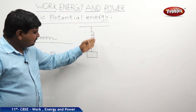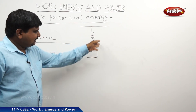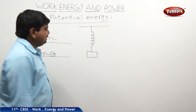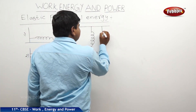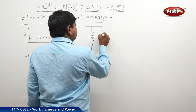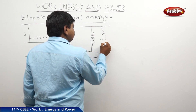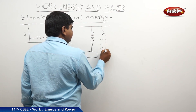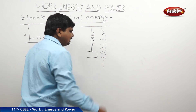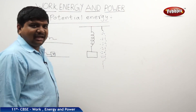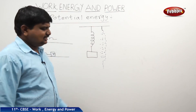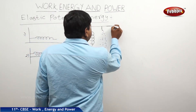Oscillations is nothing but to and fro motion — from expansion to compression. That means it will oscillate like this. We are showing in dotted lines because it is the expansion. It is not the original position of the spring; it is expanding within the limits.